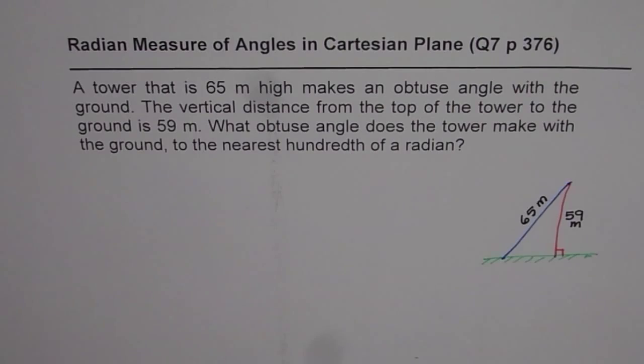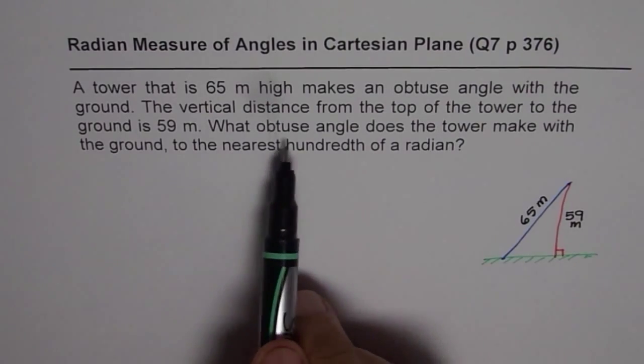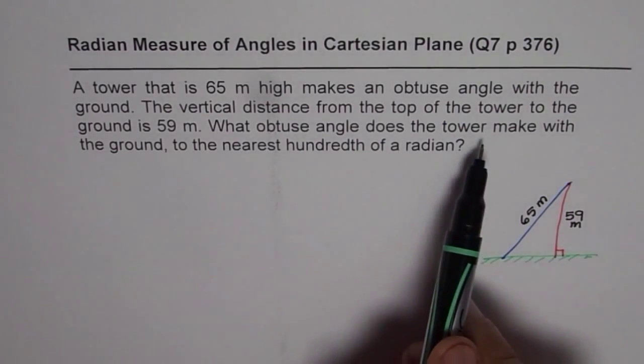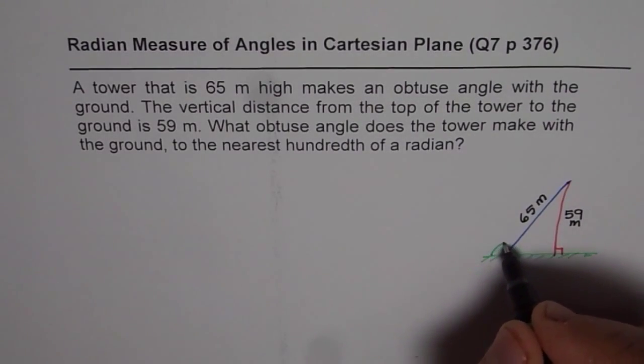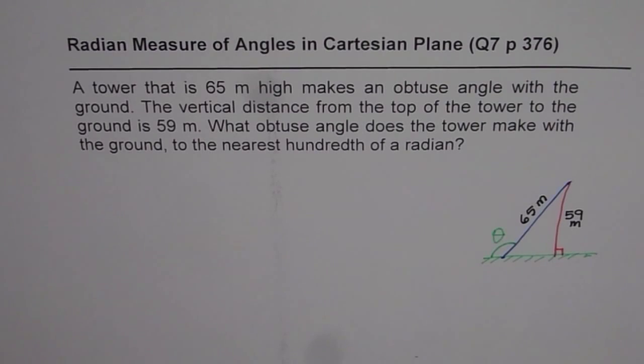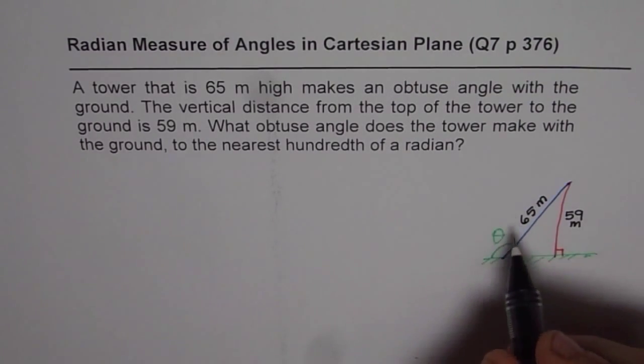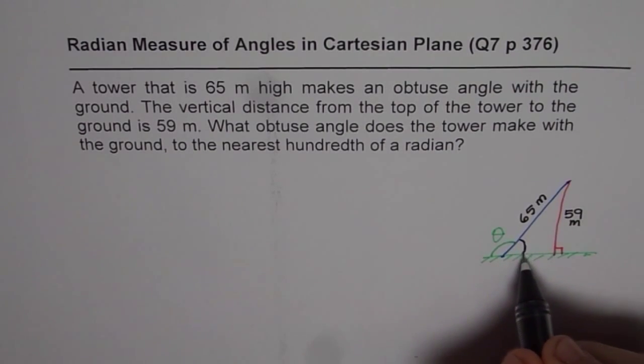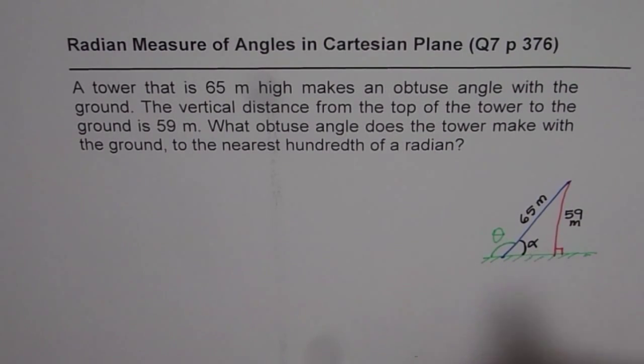And now the question is what obtuse angle does the tower make with the ground? Obtuse angle is this angle which we are talking about right. Let's call this angle as theta. Now to find theta we should find the acute angle first. Let me call that as alpha.